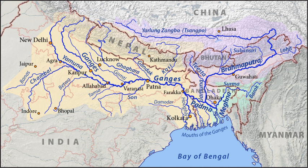The important soil types found in the basin are sand, loam, clay and their combinations such as sandy loam, silty clay, etc. The annual surface water potential of the basin has been assessed as 525 cubic kilometers in India, out of which 250 cubic kilometers is utilizable water. There is about 580,000 square kilometers of arable land, representing 29.5% of the cultivable area of India.